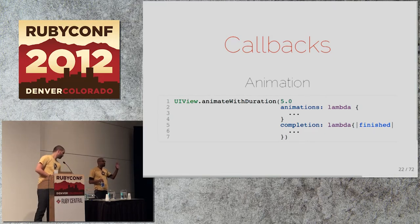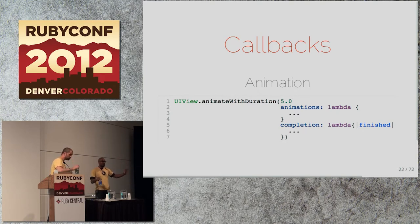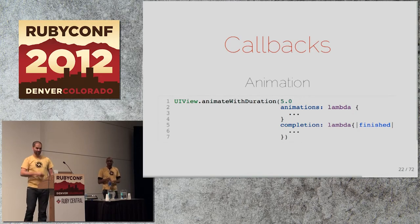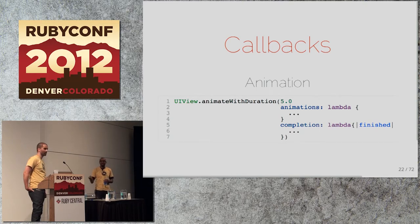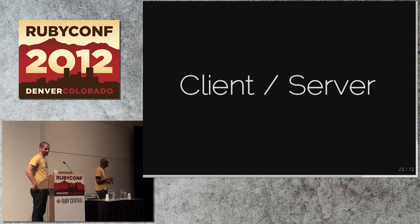Nine times out of ten when you're curious how to do something in Cocoa you need to look up what the delegate is for that component — that's where you hook in your behavioral code. If you start messing with base classes or deriving from things, you're probably doing something wrong; it should go into a delegate.